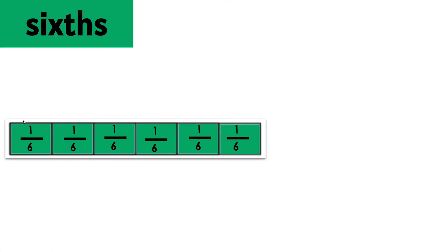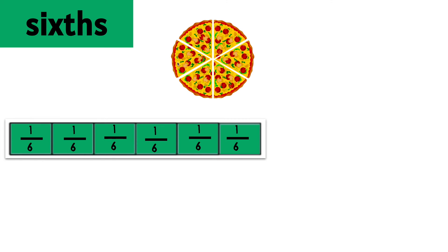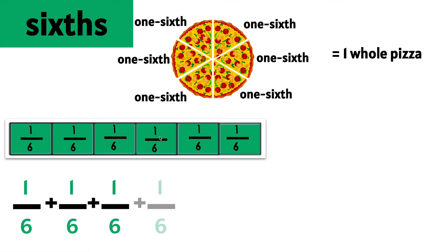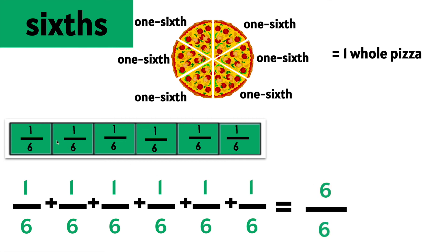Sixths. Here we have a whole that is split into one, two, three, four, five, six equal parts. Each one is worth one sixth. Here we have a pizza that is split or cut into six equal parts. Each one is worth one sixth. If you have six equal parts and they're all there, then you have one whole pizza. If you add one sixth six times, you have six sixths — all six of them — which means you have one whole.